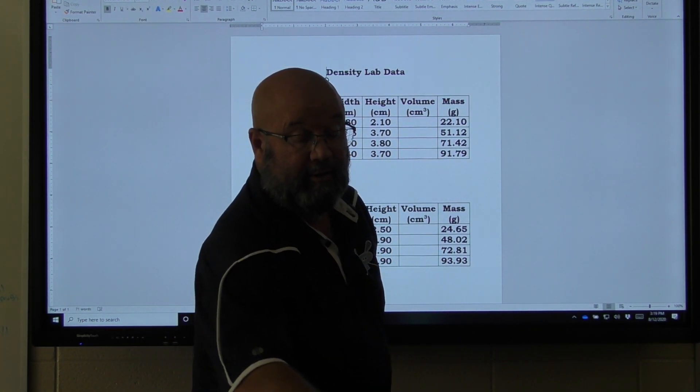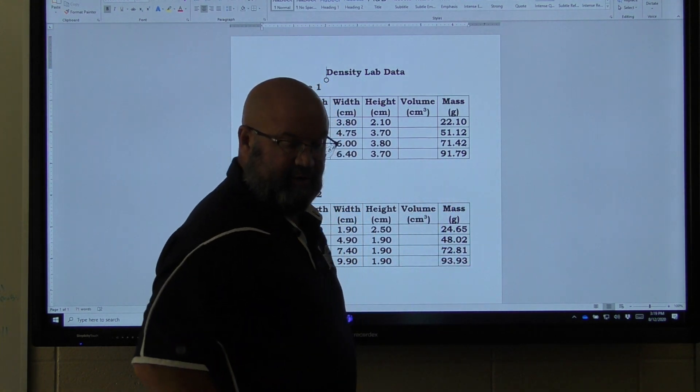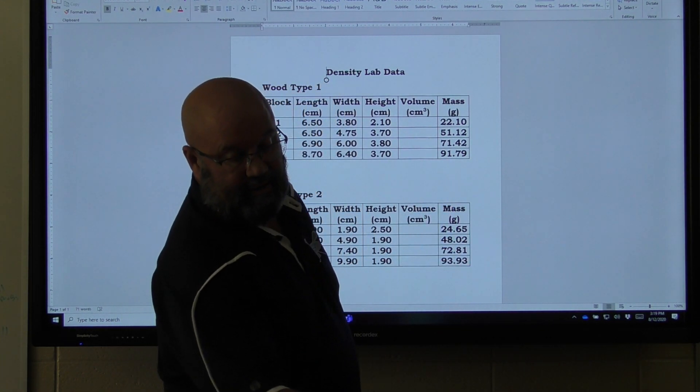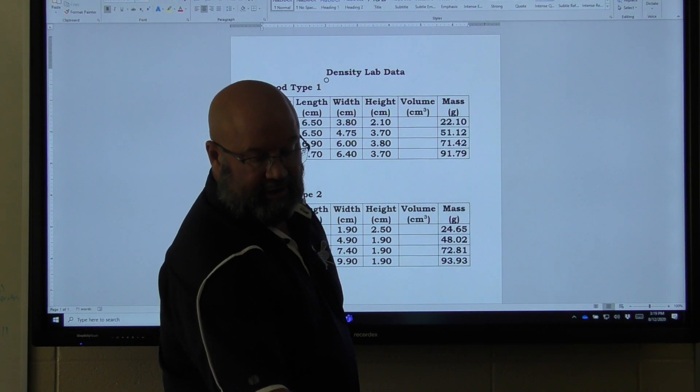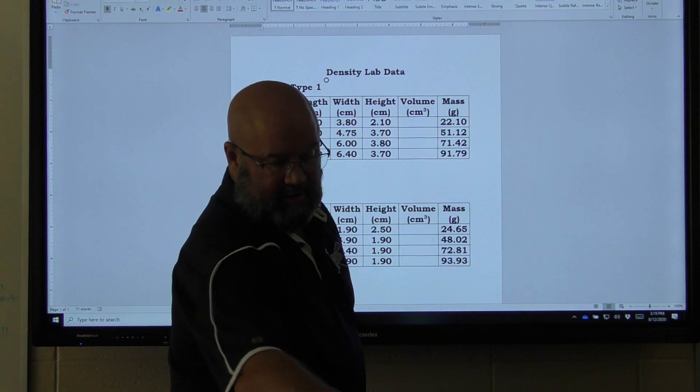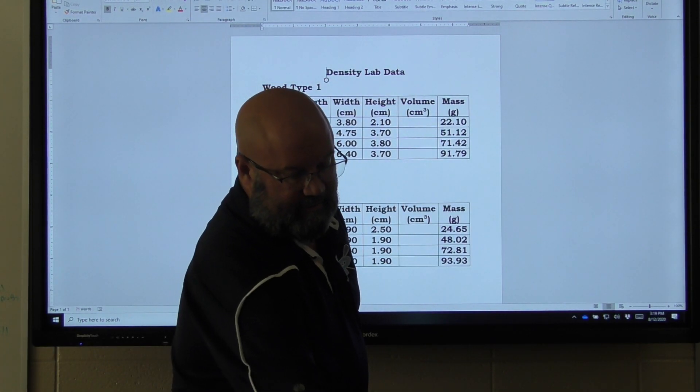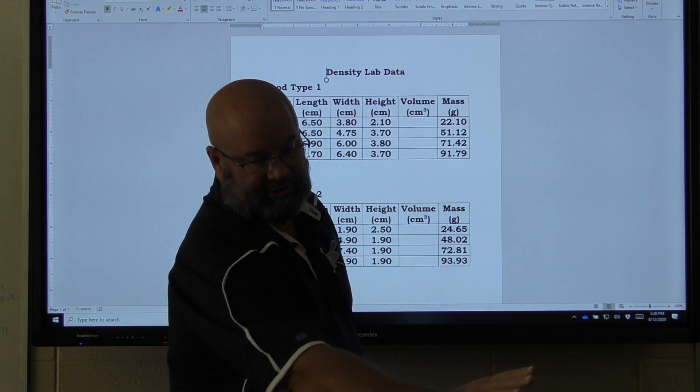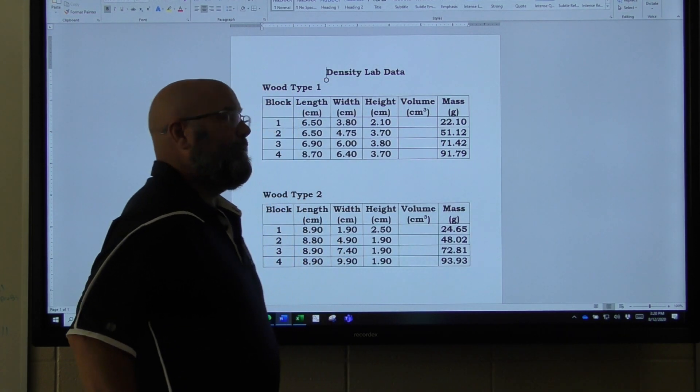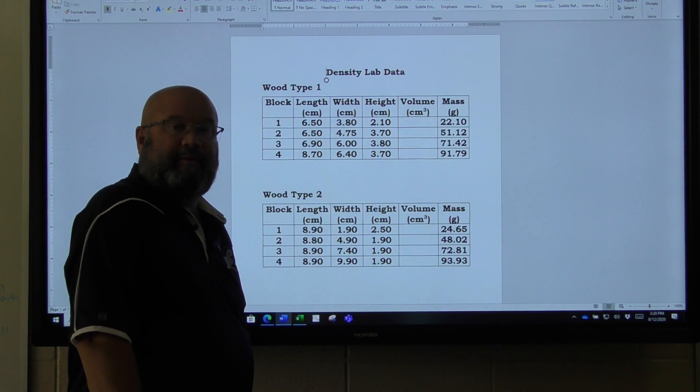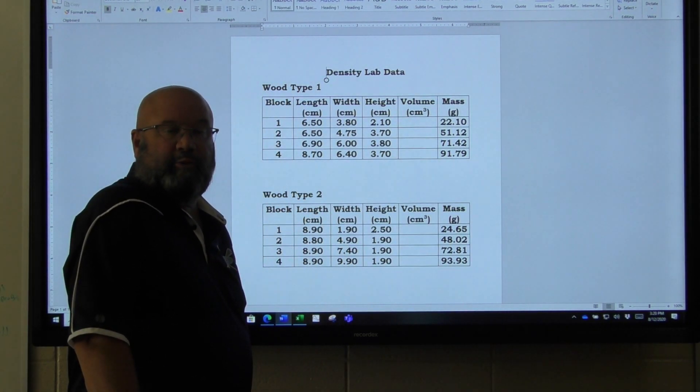You can see that on the right side over there I have block number one from one type of wood and block number one from the other type of wood. I'm not sure if you can see the difference in the color, but you know this wood is much darker than this wood, so that may be some indication that they may be different, and we'll see that with our test.